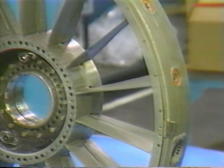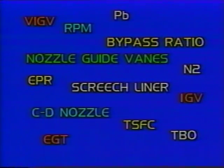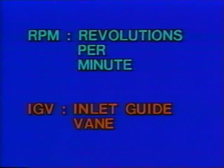Remember, the compressor is rotating at high RPM. We're beginning to see that jet engines have a language all their own: part names, operating terms, slang expressions, acronyms, abbreviations. For example, RPM — we all know that means revolutions per minute. But IGV? That's the abbreviation for inlet guide vane.